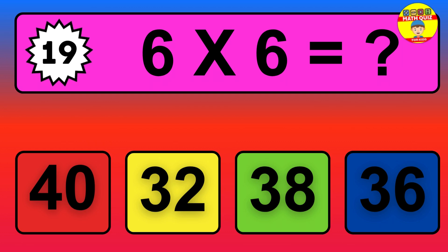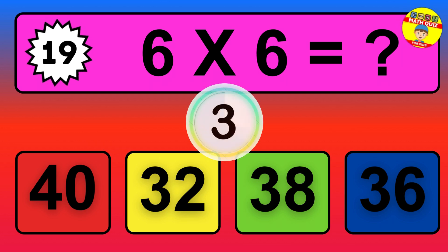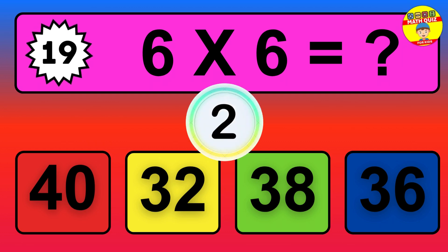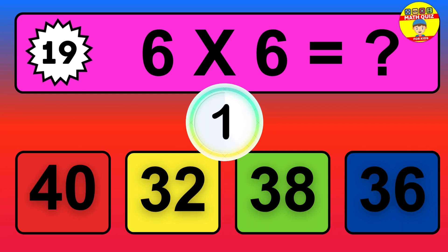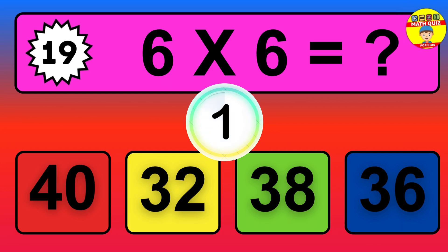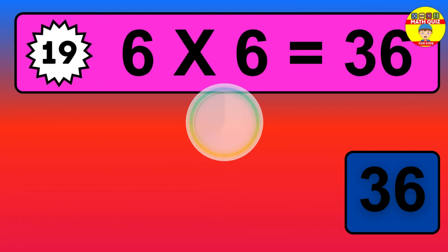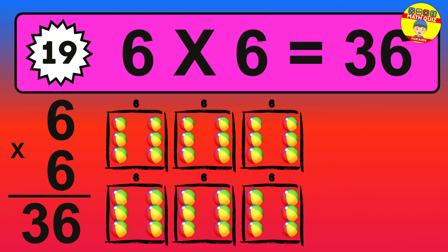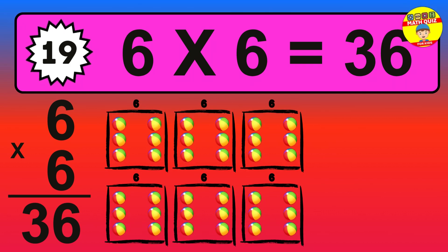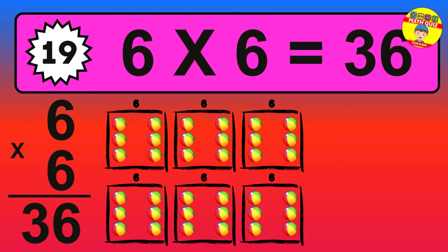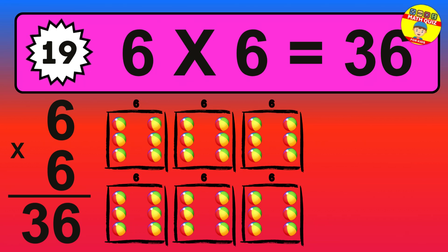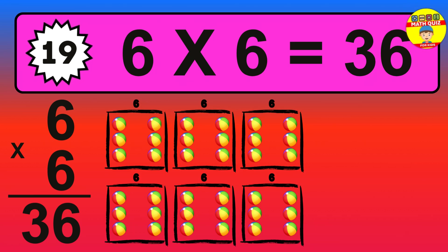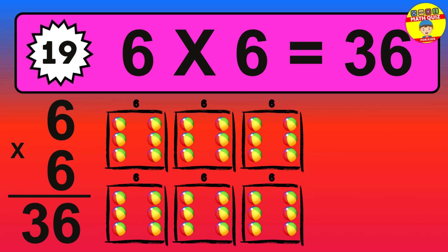Question nineteen: six times six equals what? The answer is six times six is thirty-six. To calculate, we have six groups with six balls each one. So how many balls do we have? Thirty-six balls.